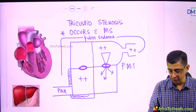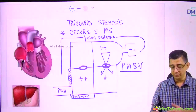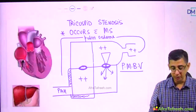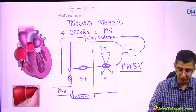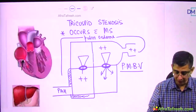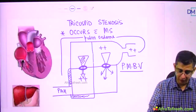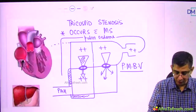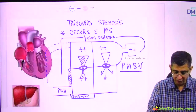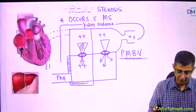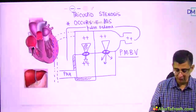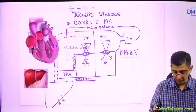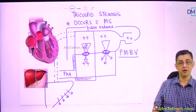When severe mitral stenosis is treated with percutaneous mitral balloon valvotomy (PMBV), the features of pulmonary congestion disappear. Now the symptoms of tricuspid stenosis will manifest. Blood flow from the RA to RV is reduced, causing congestion in the right atria, which transmits to the superior and inferior vena cava. As pressure is transmitted downward toward the liver, these patients develop hepatomegaly and, in the long run, cardiac cirrhosis.